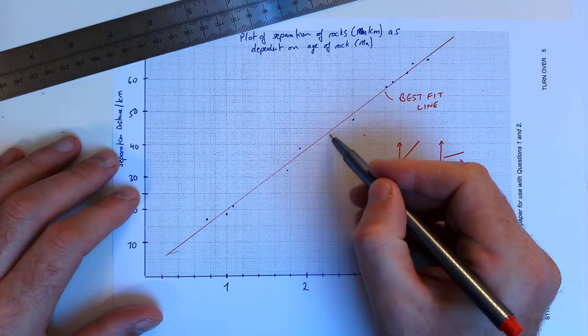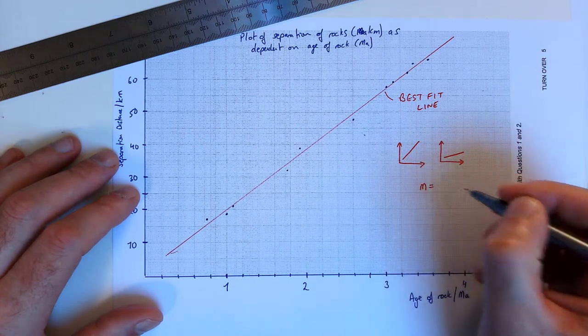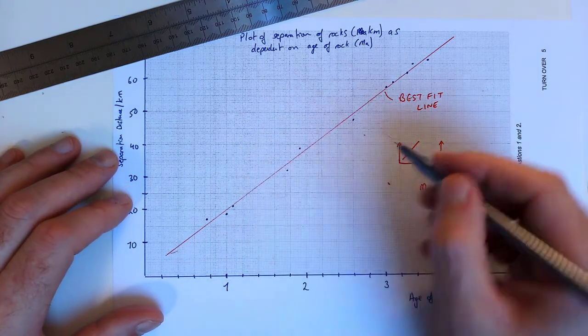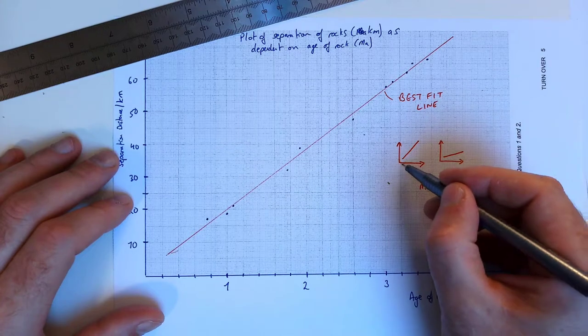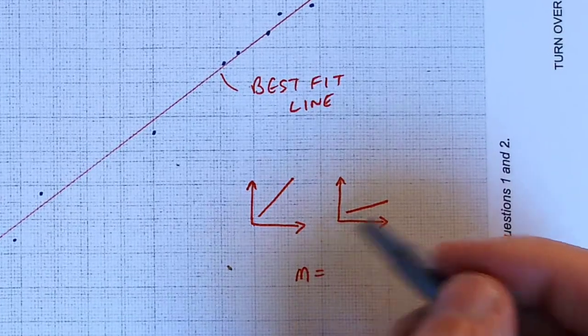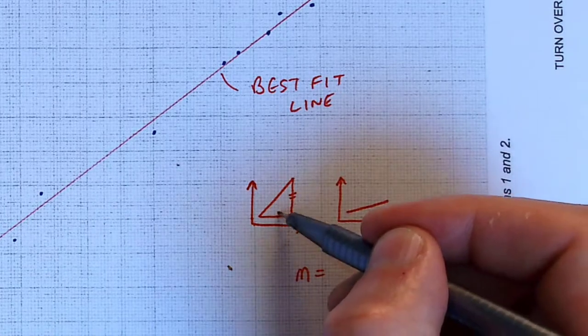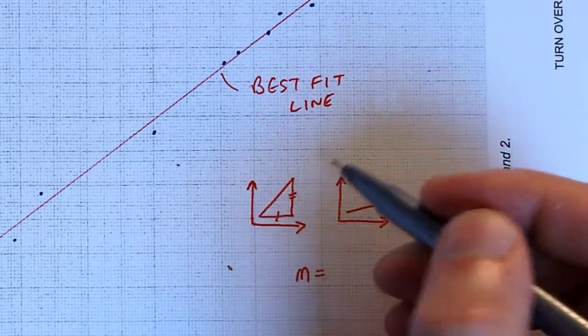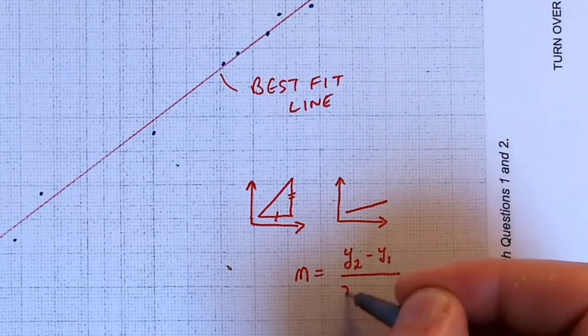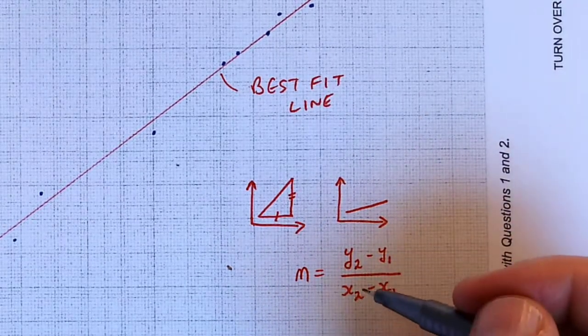So we're very interested in how much this changes. We can define the slope m as being the difference between two data points increasing in the y direction, in other words how much does it increase by, divided by the difference between two data points in the x direction, in other words how much does it increase by in the x direction. So what we're doing when we find the slope is we're finding this value here and this value here and we're dividing the two to get the rate of change. So in maths we write this as y2 minus y1 over x2 minus x1, where x1, y1 and x2, y2 are two points on the line.